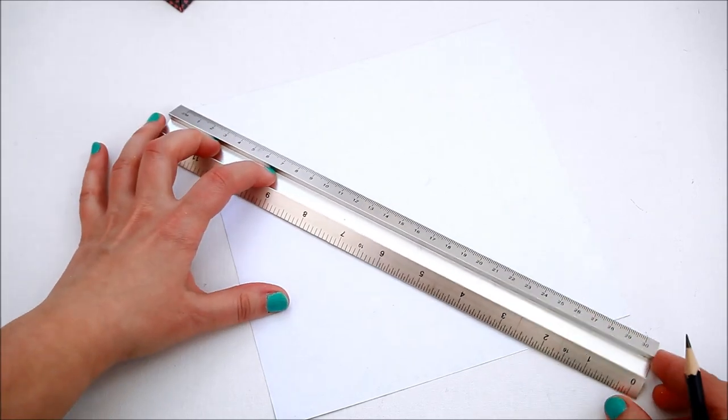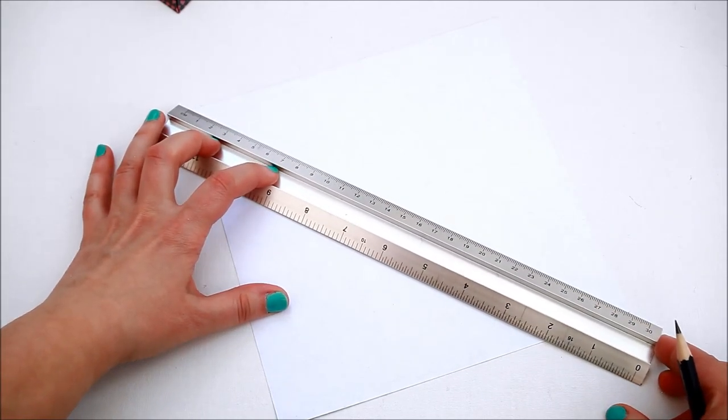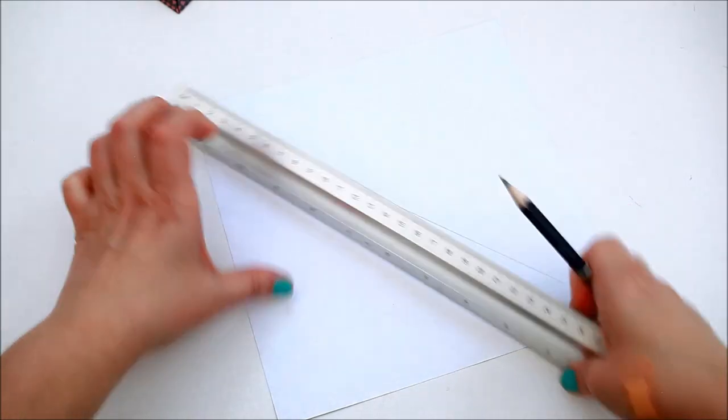First turn your paper on the wrong side, then we're gonna take a ruler and pencil and make all the measurements to create the shape of the box.